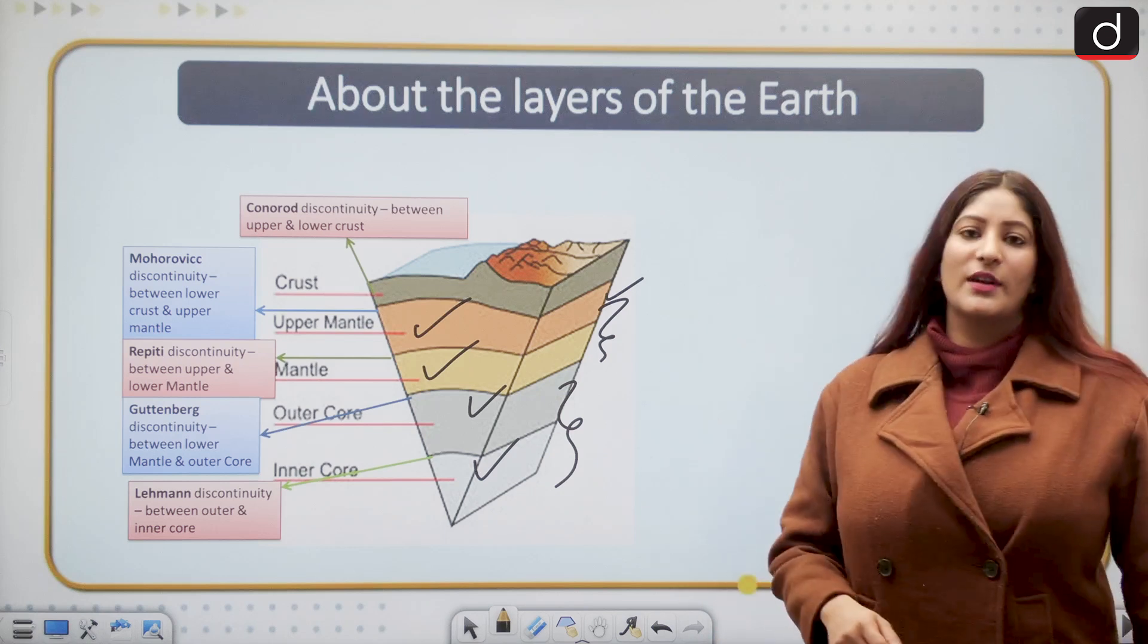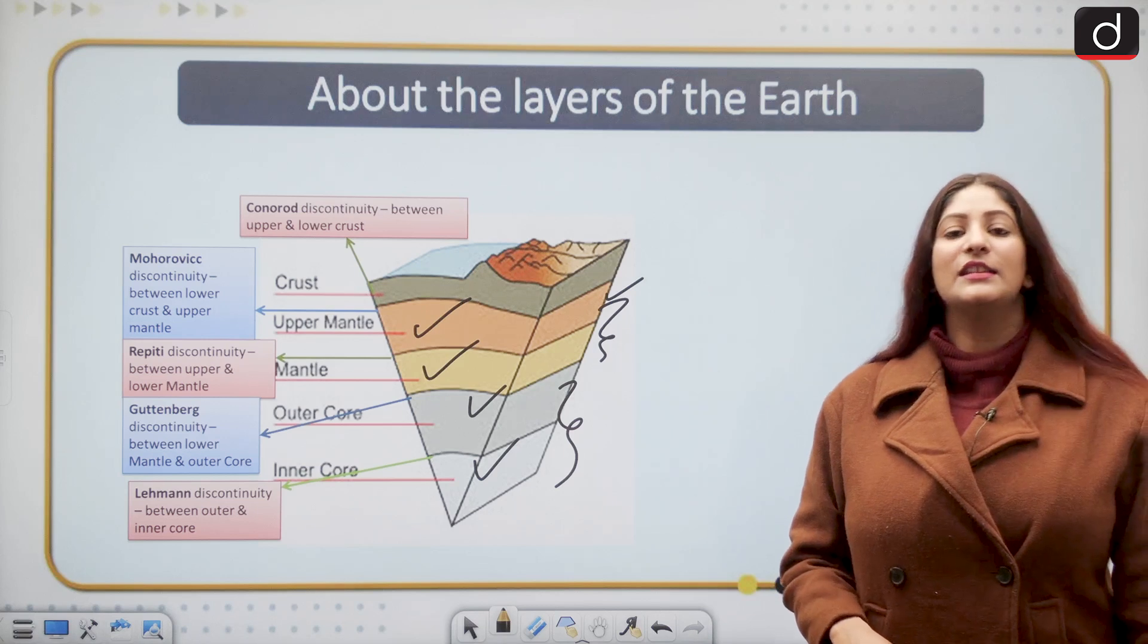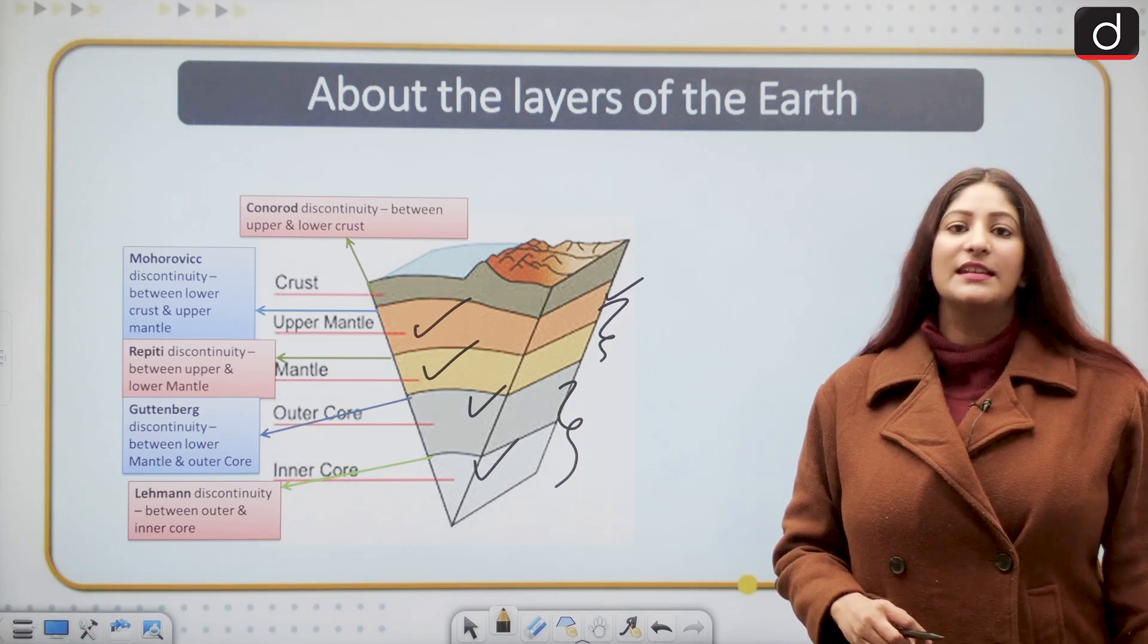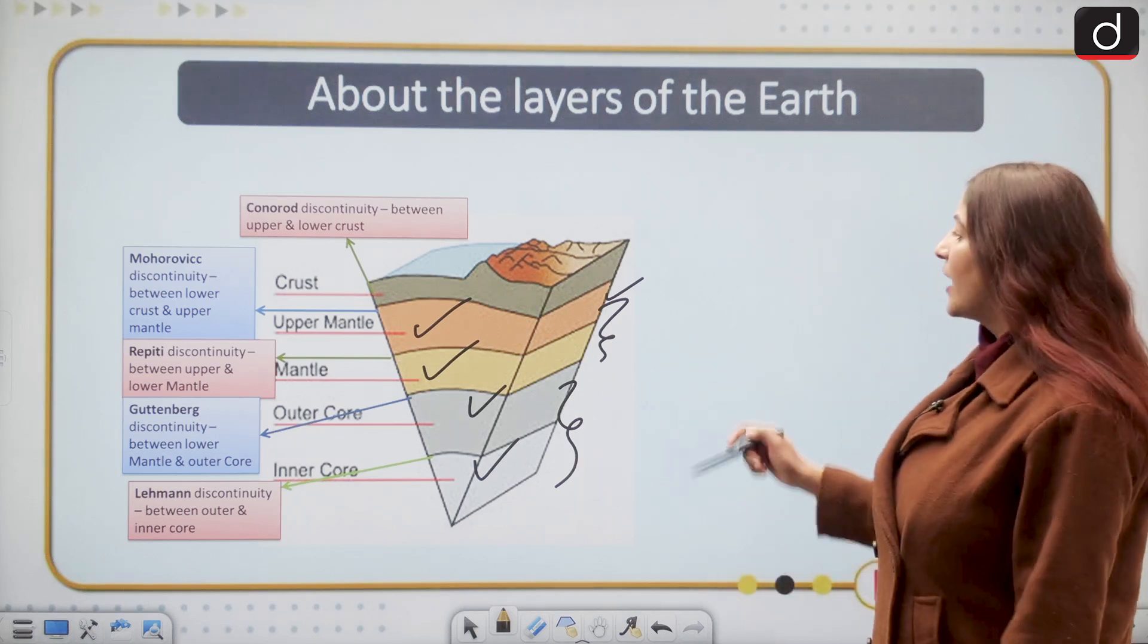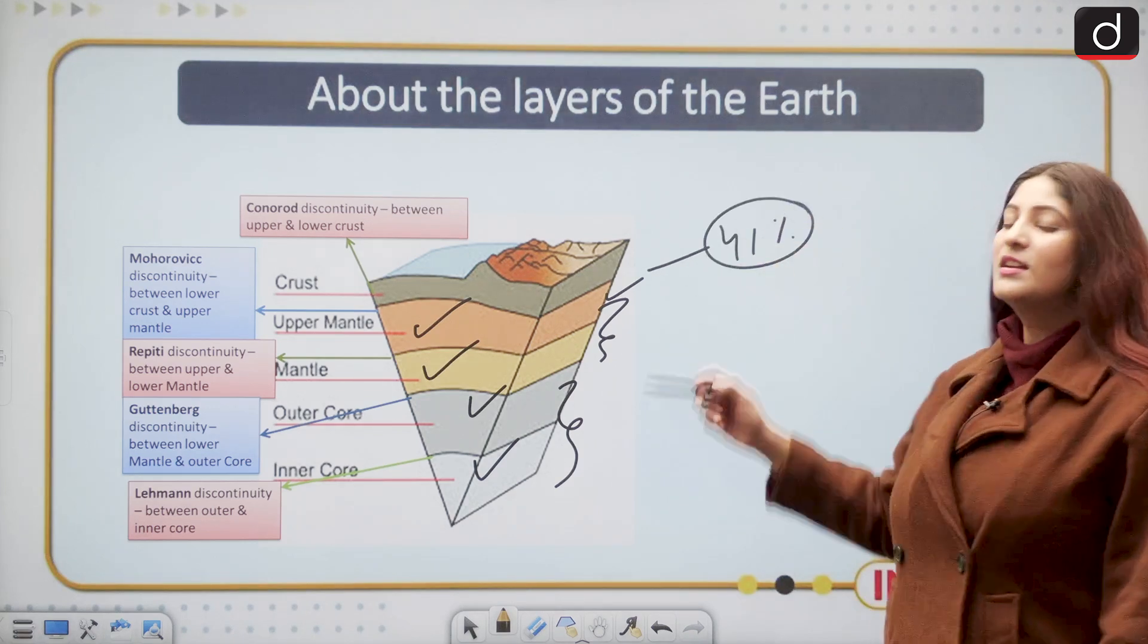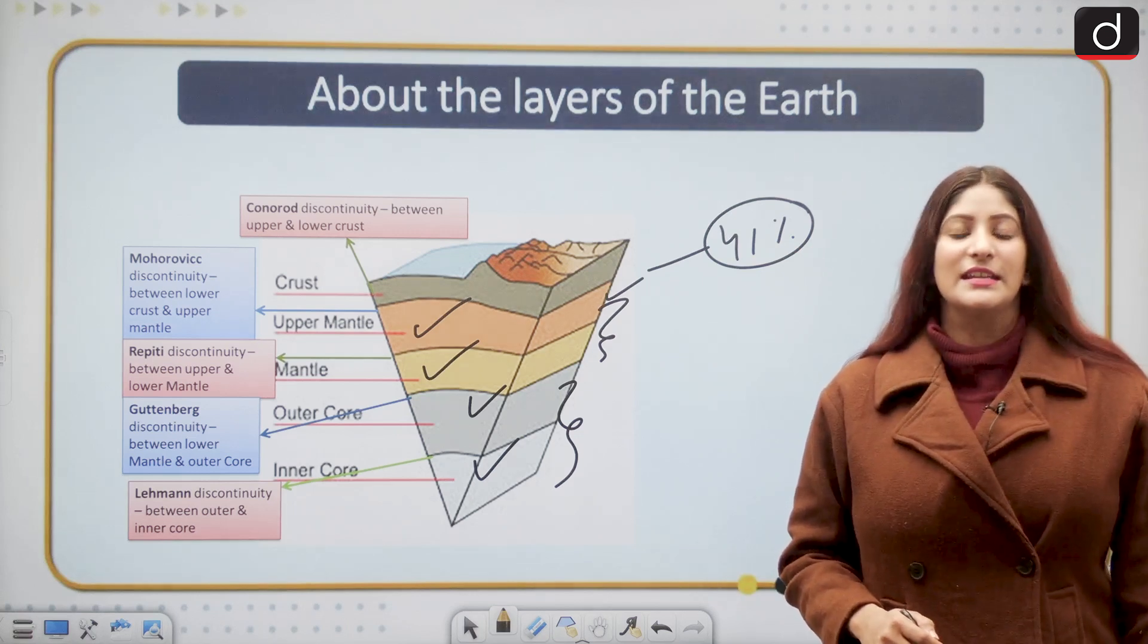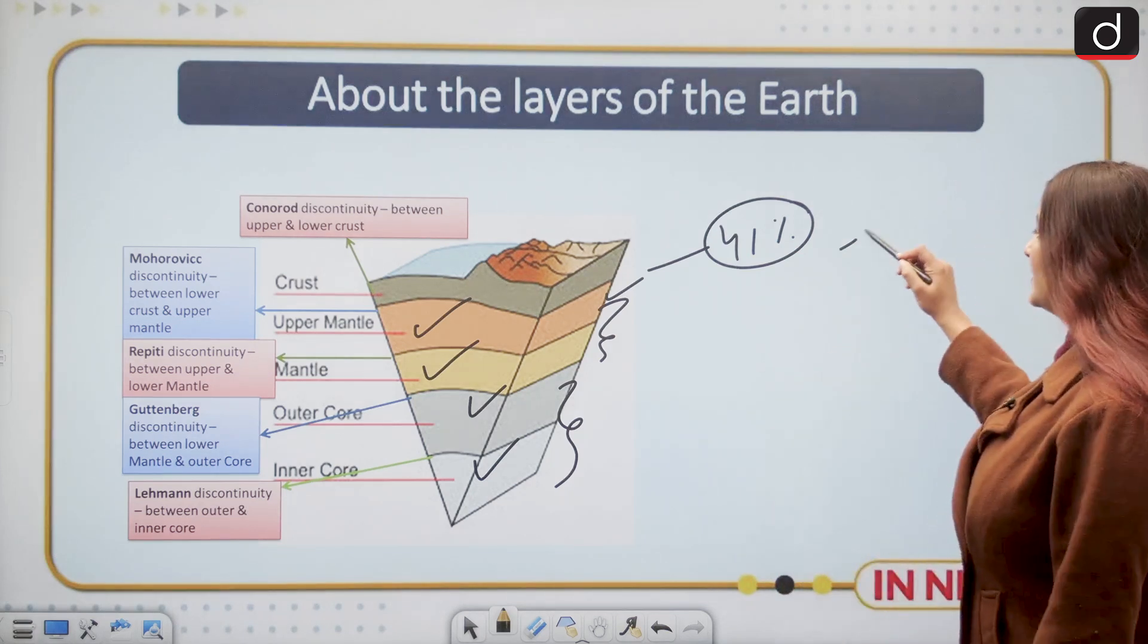If we talk about crust, the crust is thick in the continent. It is the older version in the continent, and if we talk about the oceanic crust it is the denser and the younger part. The crust makes up 41% of the earth's terrestrial surface. In the continental crust it has a thickness of approximately 20 to 80 kilometers.